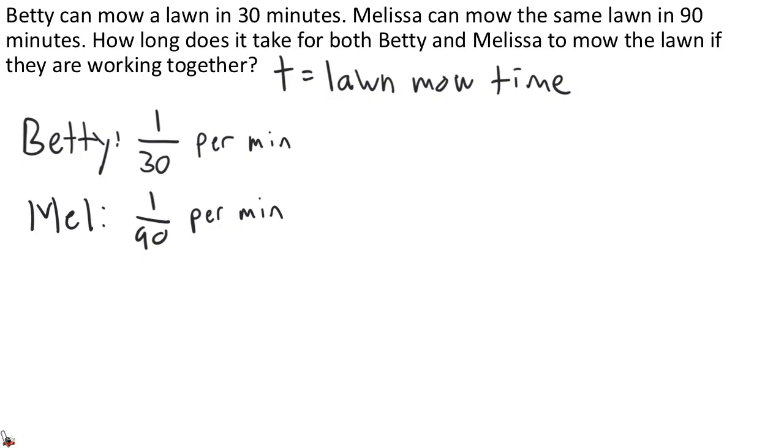Looking back at Betty, if she does 1/30th of the lawn every minute, then after 2 minutes she finishes 2/30ths of it. After 3 minutes she finishes 3/30ths of it. More generally, if T is the amount of time that Betty has been working, then T over 30 represents how much of the lawn that Betty has mowed in that time.